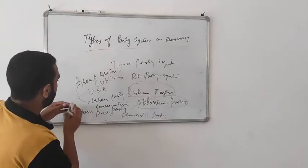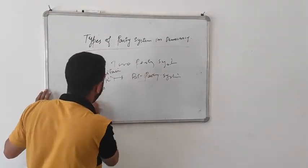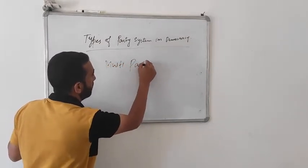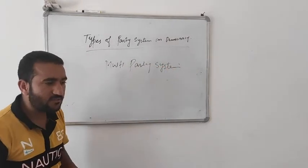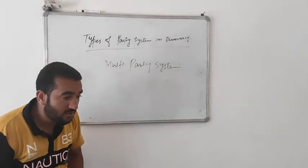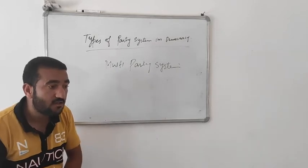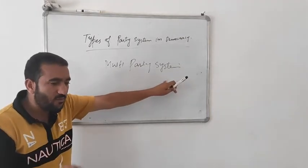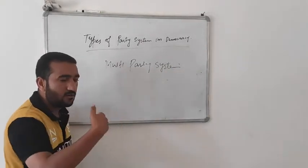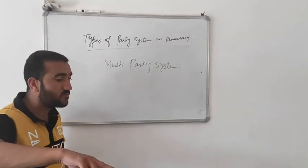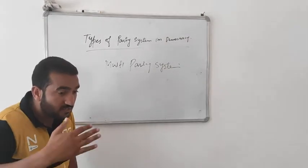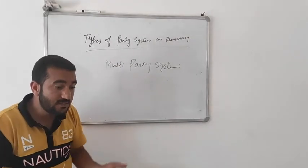Then there is the multi-party system. In a multi-party system, two or more than two political parties exist at the same time. One party becomes the ruling party and another becomes the opposition party. Many parties exist simultaneously, they influence each other, and each party competes for votes.